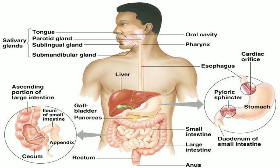There are also organs known as glands that secrete digestive juices which convert complex food particles into their simpler versions. There are three glands: salivary glands, liver, and pancreas. The salivary glands secrete a sticky liquid called saliva.